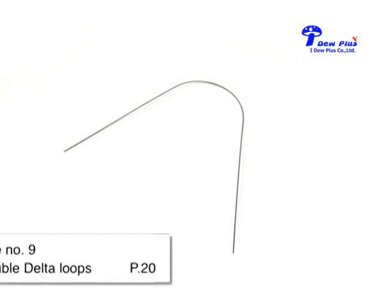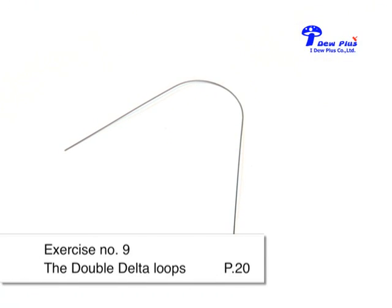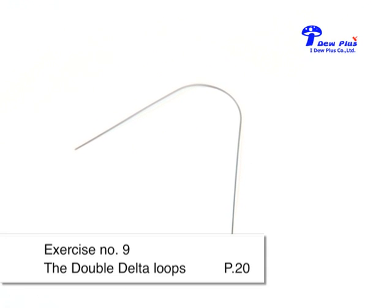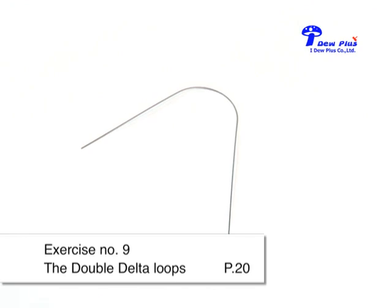Number 9 — the double delta loop. Exercise number 9, the double delta loop. The wire used is 16-22 for demonstration purposes.